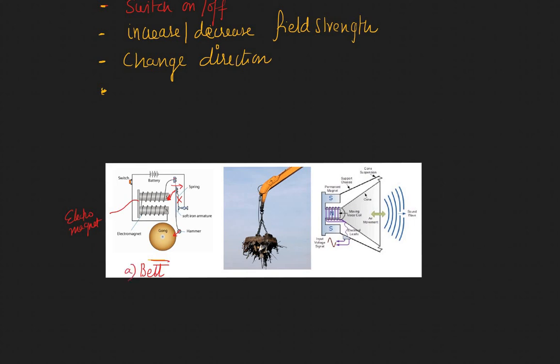Another use is electric cranes. You can switch the electromagnet on and off, and you can carry scrap or any kind of metallic load from one place to another.